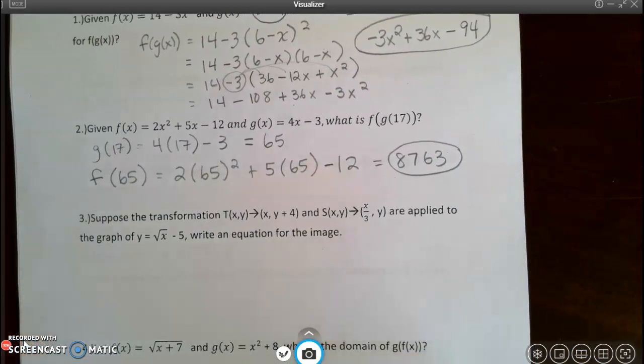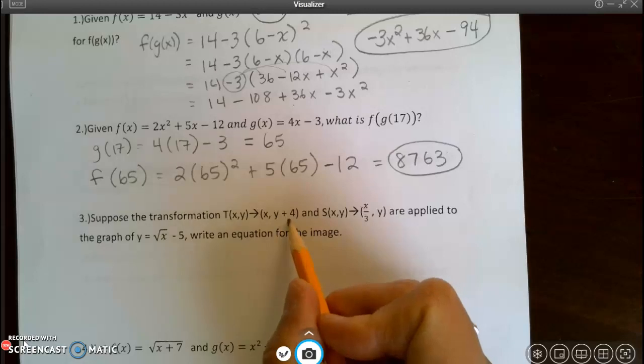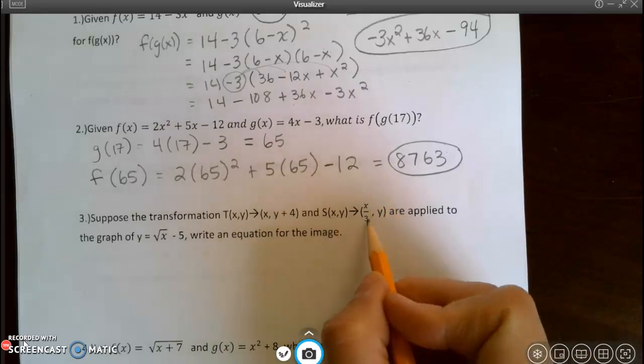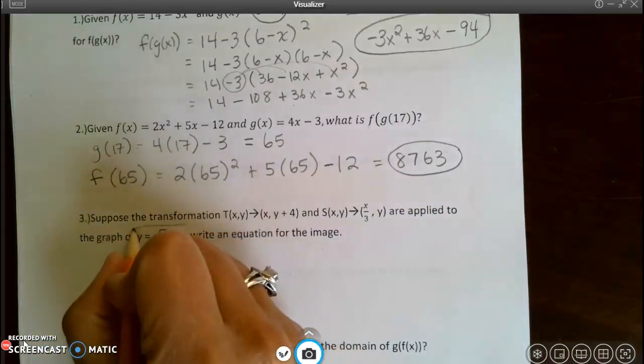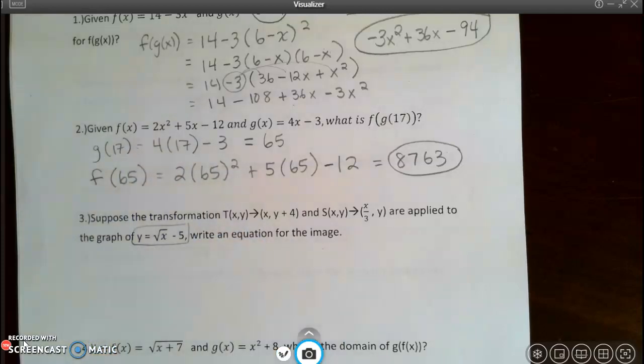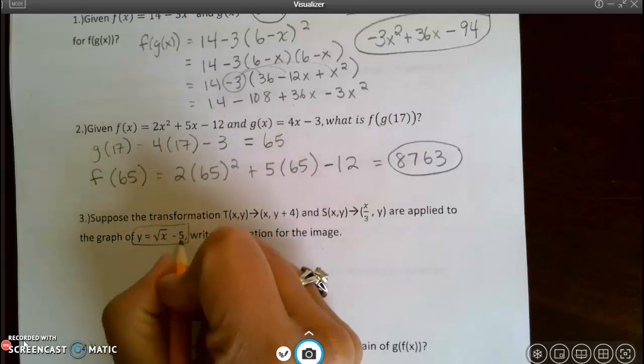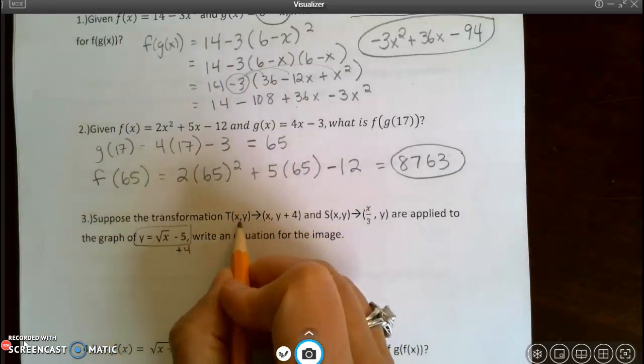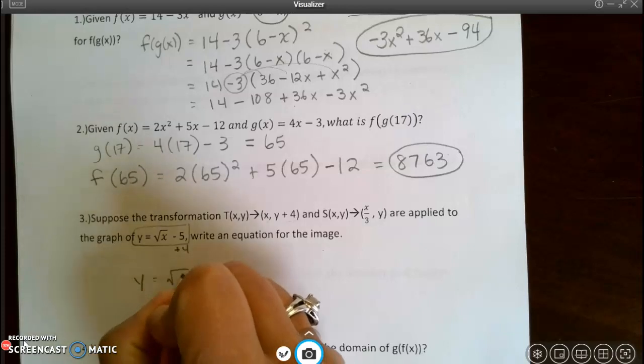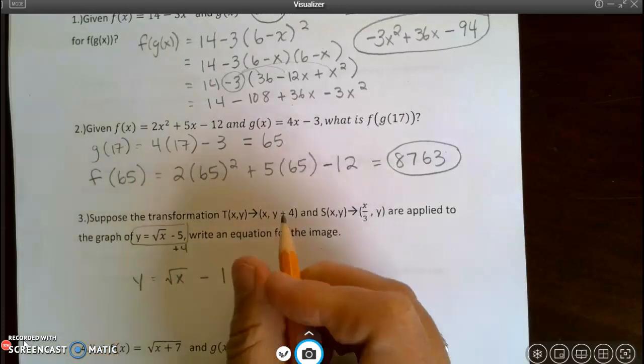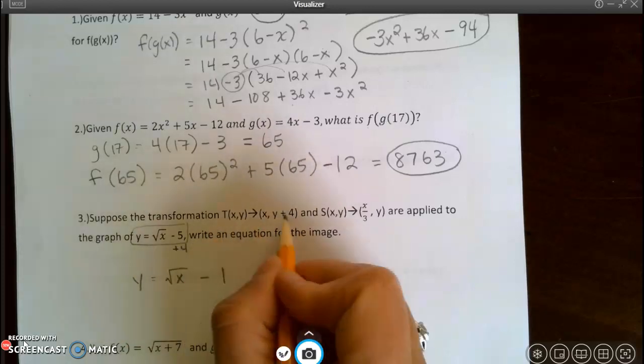Number three. Suppose that I have a transformation or translation where I'm going to do nothing to x, but I'm going to add 4 to the y. And then I'm going to do a scale change where I divide x by 3, but then don't do anything to the y. So when I look at my translation, I didn't do anything to x, but I added 4 to the y. So this is going to have a 4 added to it. So after the translation alone, I have y equals the square root of x minus 1 plus 4, because y tells the truth. It does exactly what it says it's going to do.